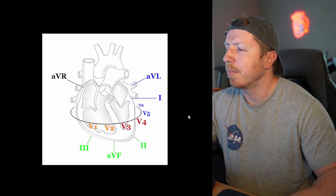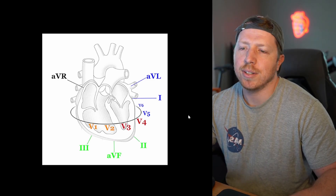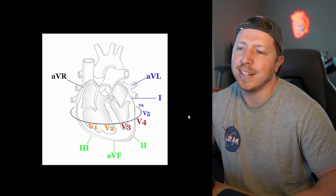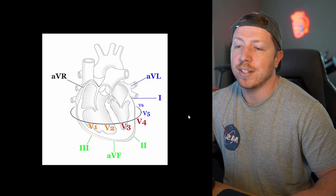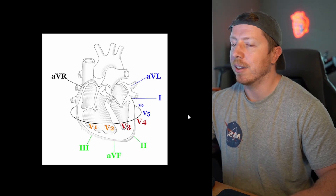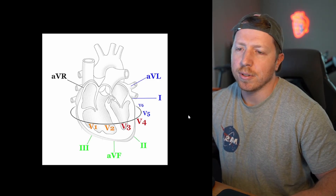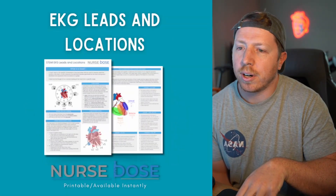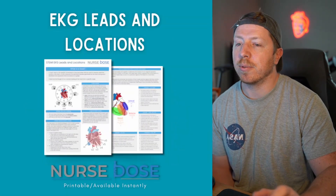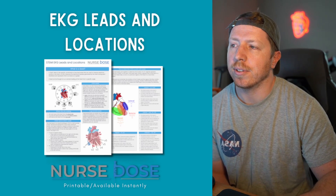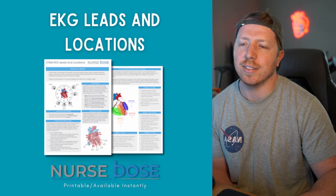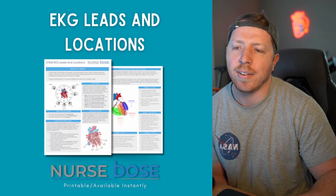As a new grad studying for my CCRN, I actually came up with this graphic, and it's what I use to this day — a little more modified because it now shows the coronary arteries. This is what I use to determine STEMI locations and determine which leads I need to be monitoring for my post-CABG patients or other post-cardiac surgery patients. If you're interested in having this information at your fingertips, there's an EKG leads and locations cheat sheet linked in the description below.